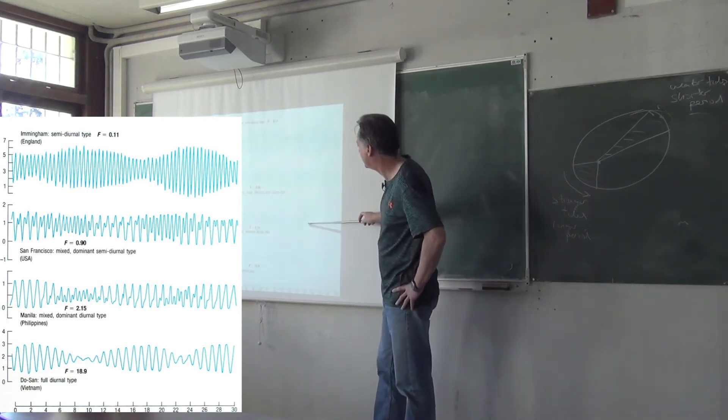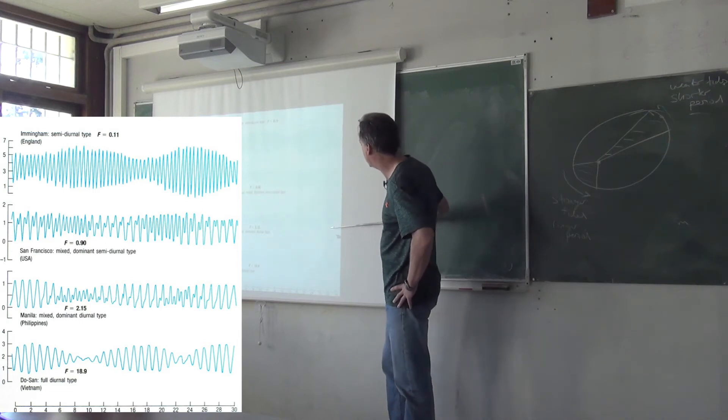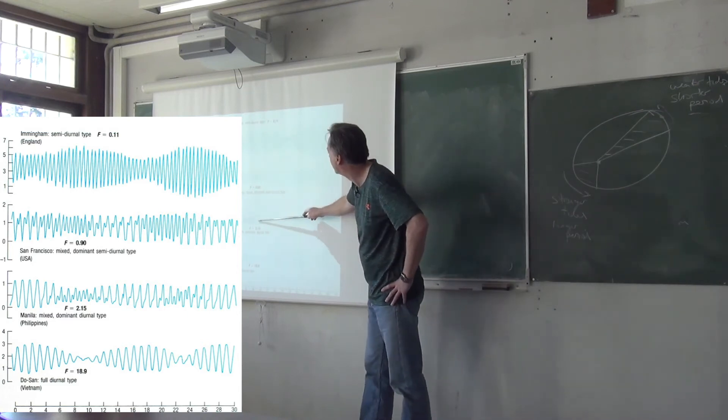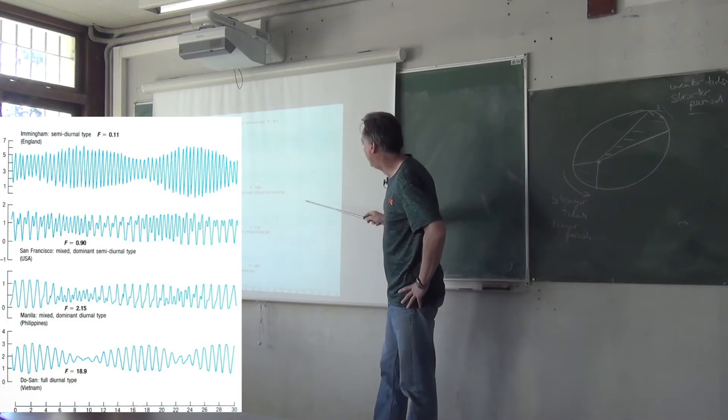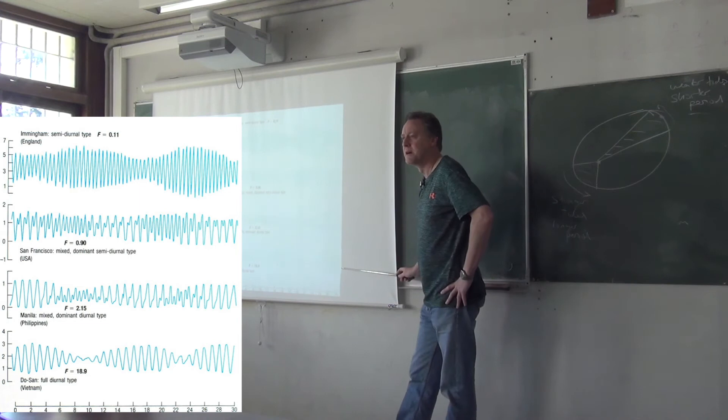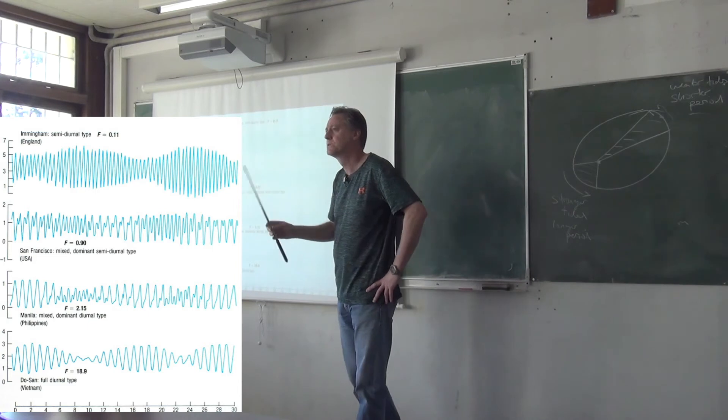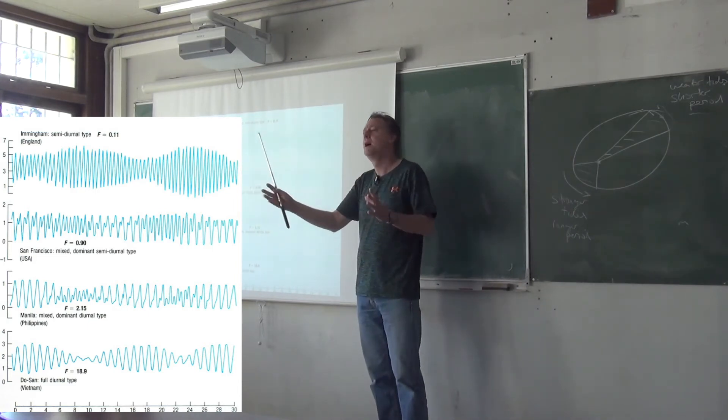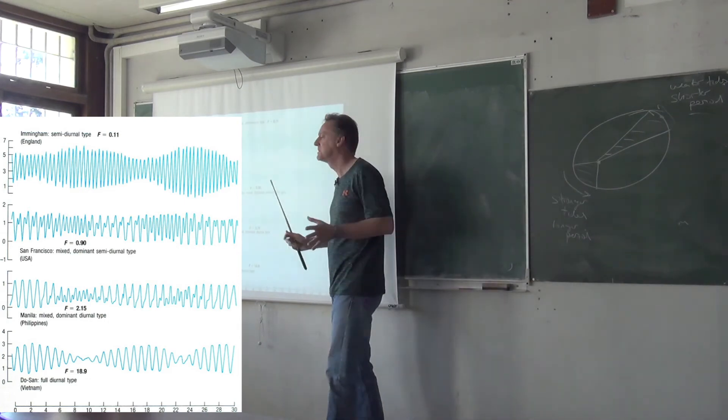Then we go to Manila in the Philippines, and it's another mixture, but the diurnal frequency is dominating here. You've got a few semidiurnal signatures where the tidal amplitude is a bit lower, but when you have the high tides, it's diurnal. And then Vietnam, you have a very clear diurnal tide, not necessarily for the reasons I was explaining earlier, just to do with latitude. It's also to do with the size of the basin, how long it takes a Kelvin wave to go around. That's what picks out these different frequencies.